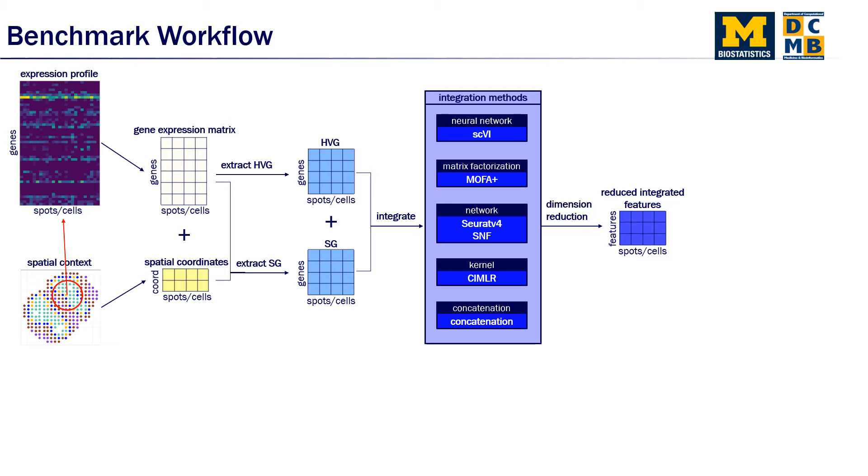And then we integrated these two sets of features using the following integration methods: SCVI, which is a neural network based method; MOFA plus, which is matrix factorization based; weighted nearest neighbor, which is implemented in Seurat version 4; and similarity network fusion, both of which are network based methods; SCVI similar, which is a kernel based method; and naive concatenation. We use these integration methods to combine highly variable genes and spatially variable genes. Then we do dimension reduction and end up with reduced integrated features, which we then use to do clustering analysis.